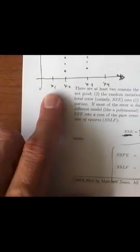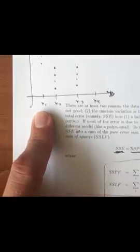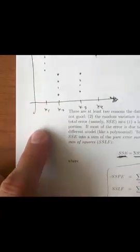SSPE, look at what it's measuring. So first of all, yij is the jth observation at the ith x value. And then yi-bar is the sample mean there at the ith x value.